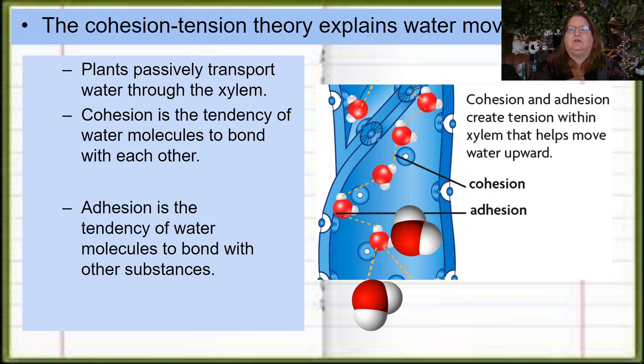Plants are going to passively transport water through their xylem, and they're going to be able to do this because of the property of water called cohesion. Adhesion is going to be there to help as well, and so what we end up having are two things that work together called cohesion and tension.